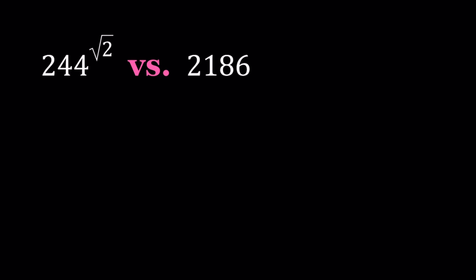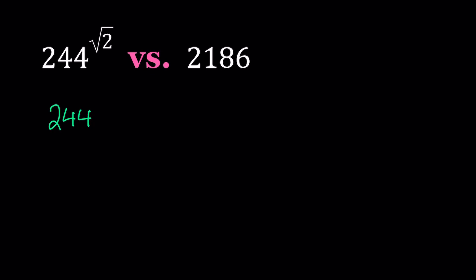Let's start with 244 to the power square root of 2. It's a weird irrational number. Square root of 2 can be approximated using rationals, so on and so forth. I'm going to start by comparing 244 to 243. Obviously, 244 is greater than 243.